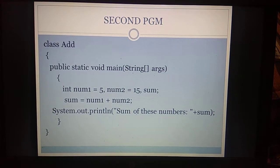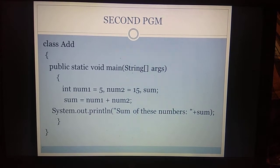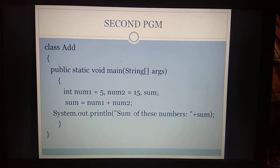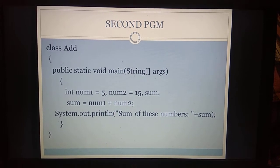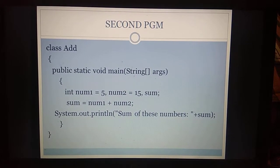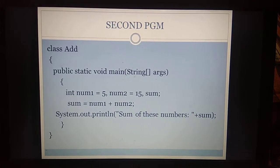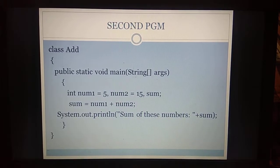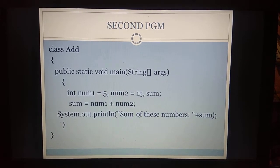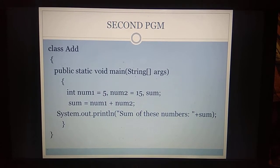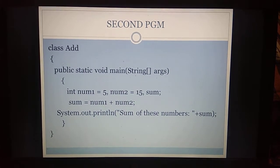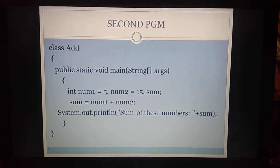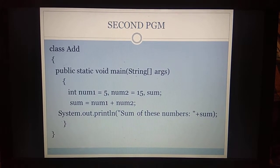We are getting the result in the sum variable and displaying it as output. We are using the output statement system.out.println and opening double quotes — 'sum of these numbers' — colon will be displayed as output. Plus is a concatenation operator between the string and the integer variable sum. Keep in mind, sum is the integer variable and the double-quoted thing is a string. We are concatenating the string and the integer using the plus operator. If you give plus between two integers it will do addition; when given between an integer and a string or float inside system.out.println, it will do concatenation.